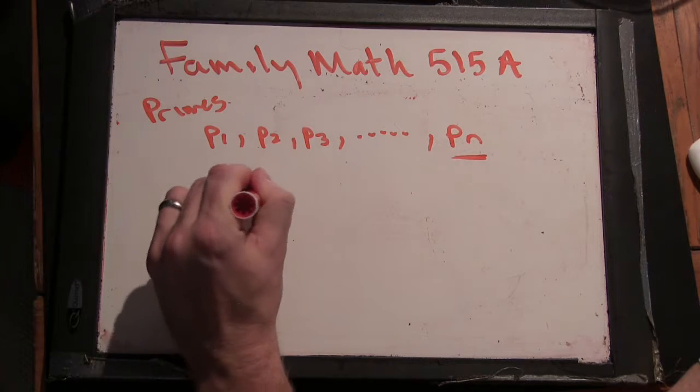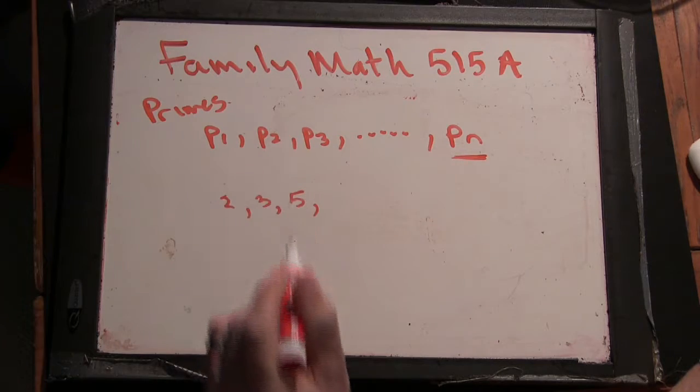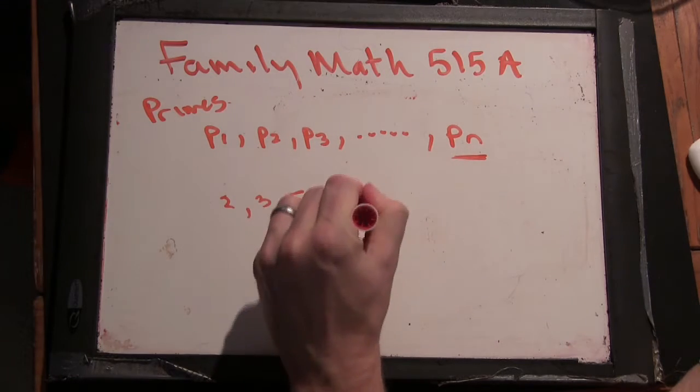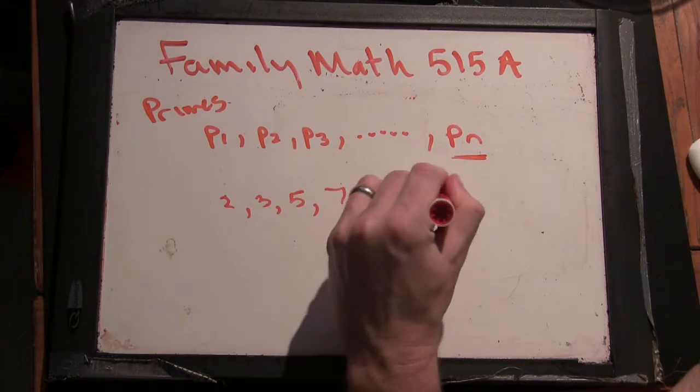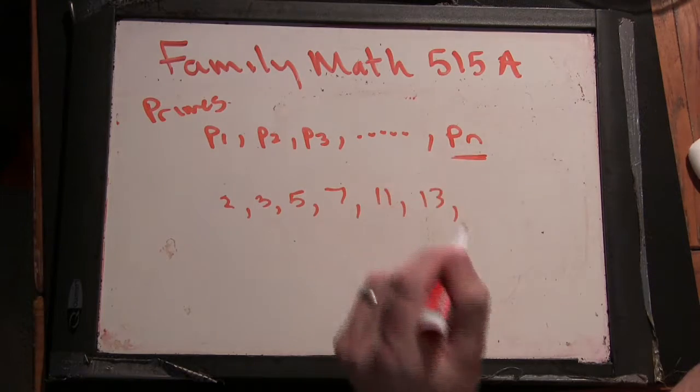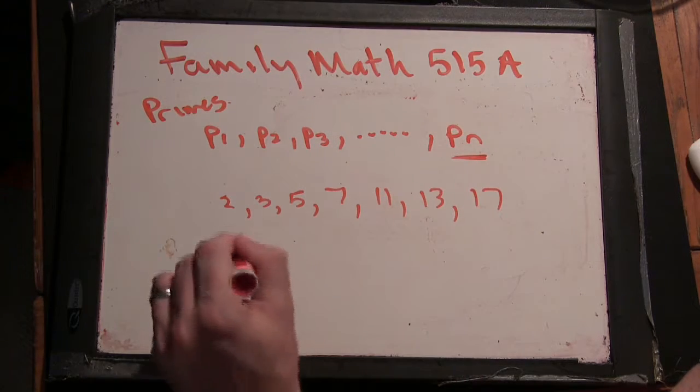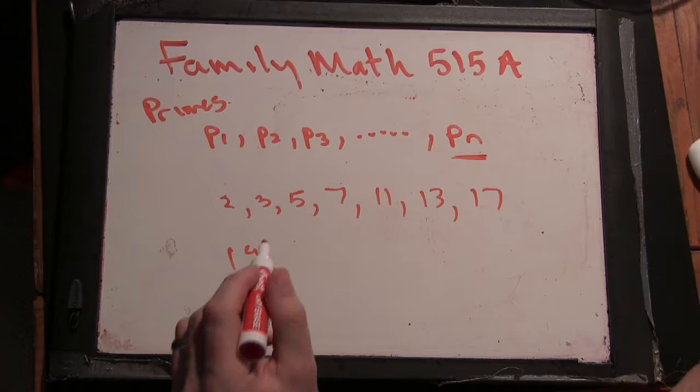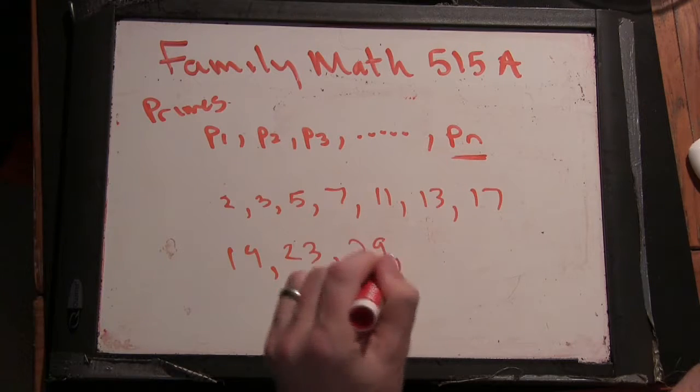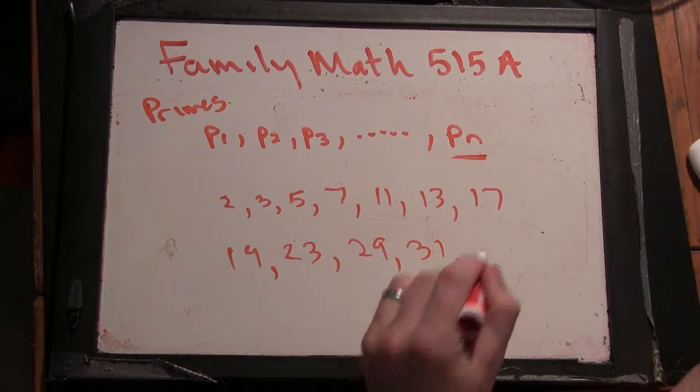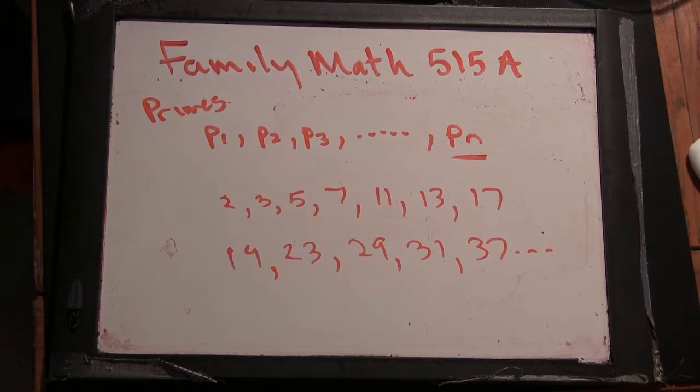So we wrote down 2, 3, 5, can we keep going for this? 7, 11, 13, 17, 19, 23, 29, 31, 37, stop. Okay.